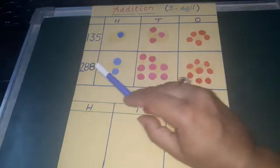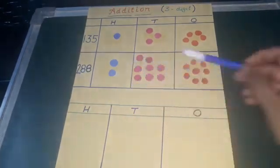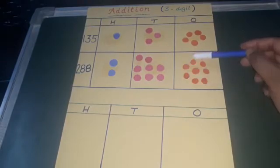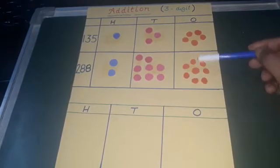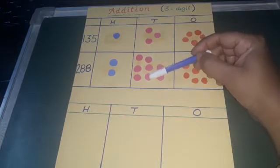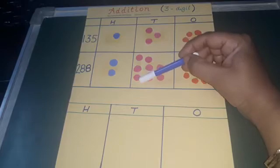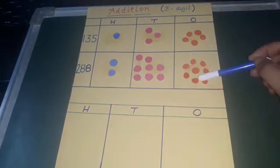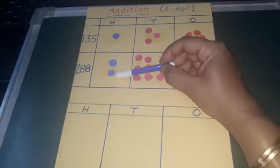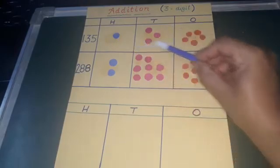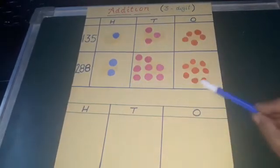Now here we have 288. So here we have 1, 2, 3, 4, 5, 6, 7 and 8. And here 1, 2, 3, 4, 5, 6, 7 and 8. 8 tens and 8 ones here. And 1, 2, 2 hundreds. So here it is 135 and 288.